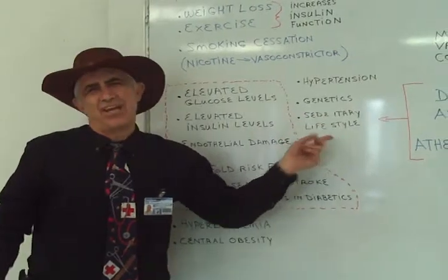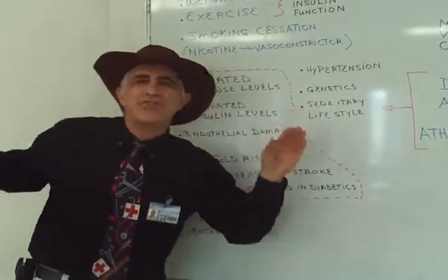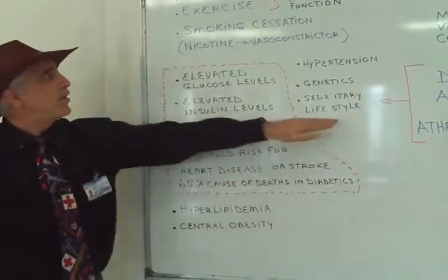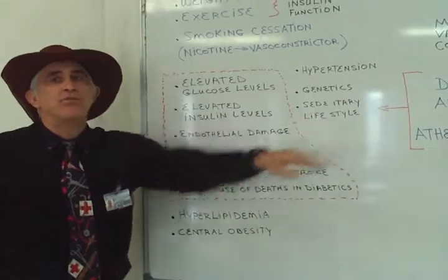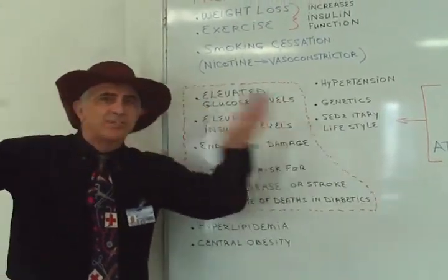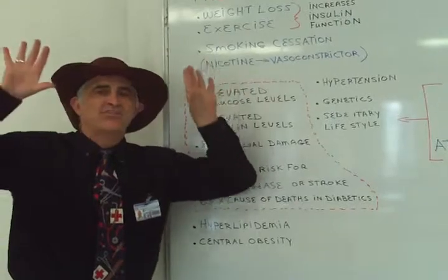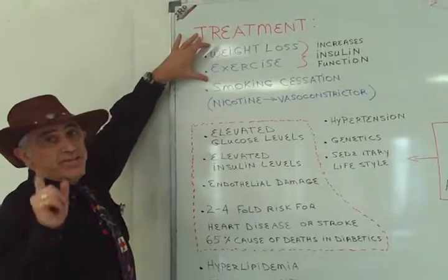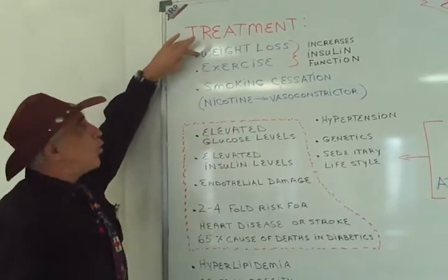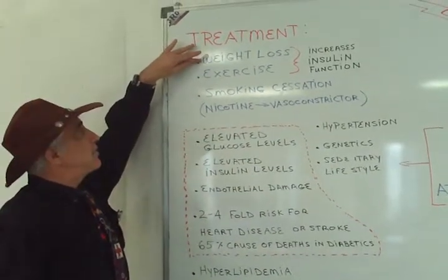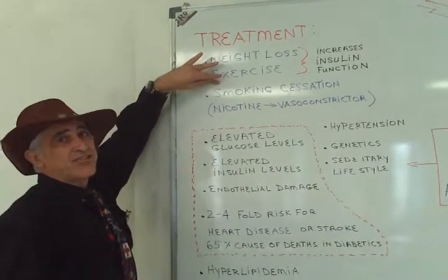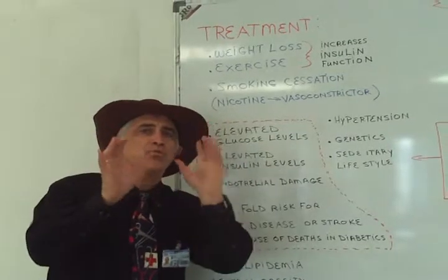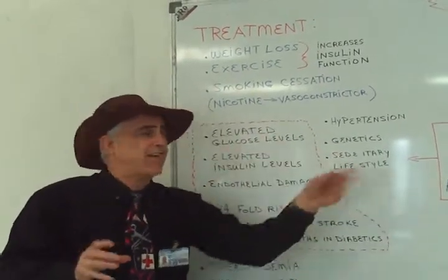Sedentary lifestyle — what some call being a couch potato — is another risk factor. What can we do to treat, offset, or prevent atherosclerosis? There are two major approaches: one is weight loss, and two is exercise. Exercise and weight loss are great assets in stopping or preventing atherosclerosis.